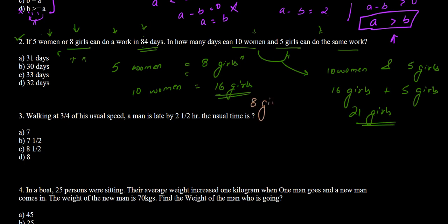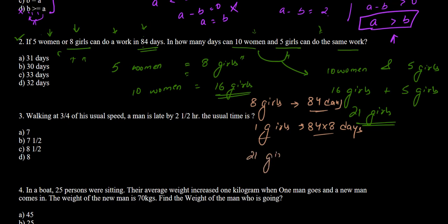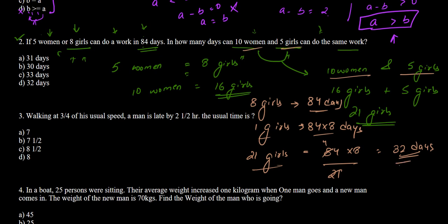8 girls do the work in 84 days, so one girl would take 84 into 8 days. For 21 girls, the days will be 84 into 8 divided by 21, which simplifies to 32 days. So 10 women and 5 girls can do the same work in 32 days. In the options, option D says 32 days, so option D is the correct answer.